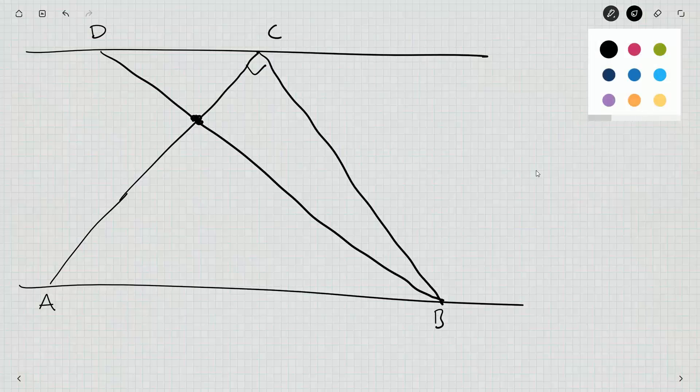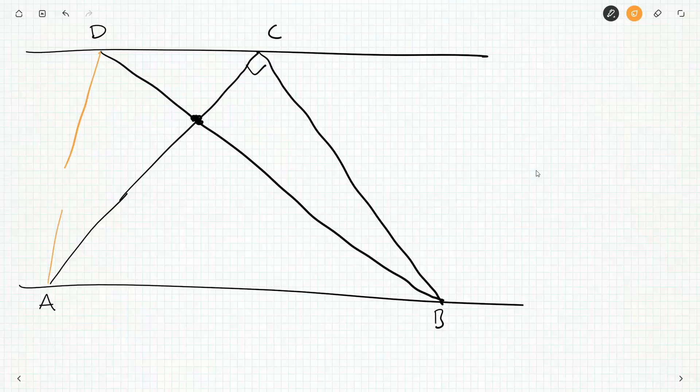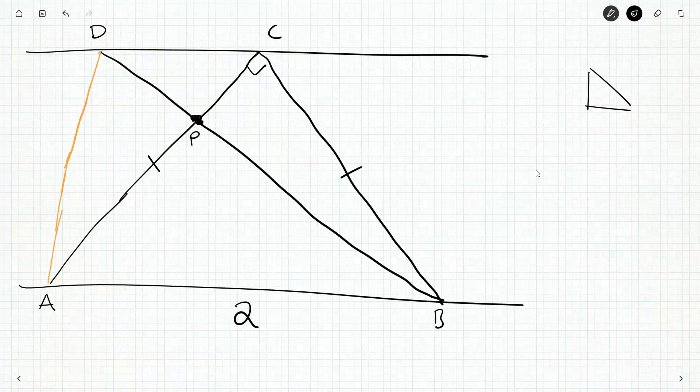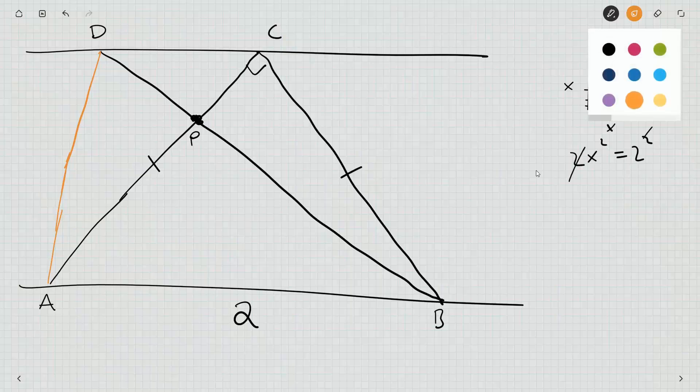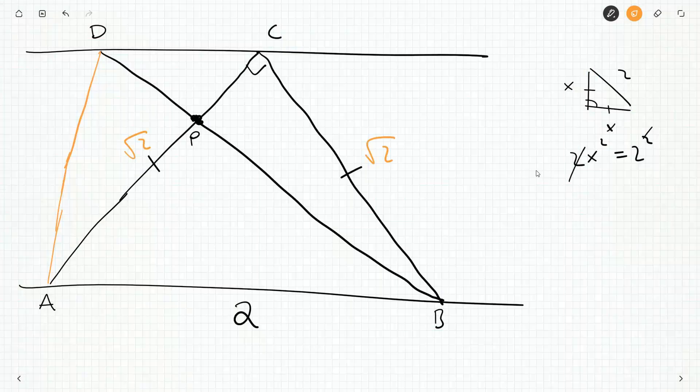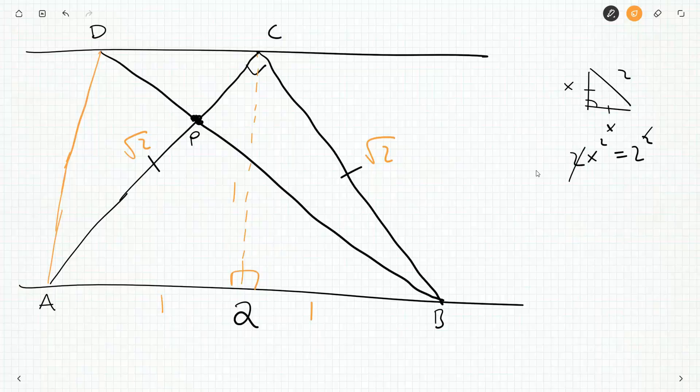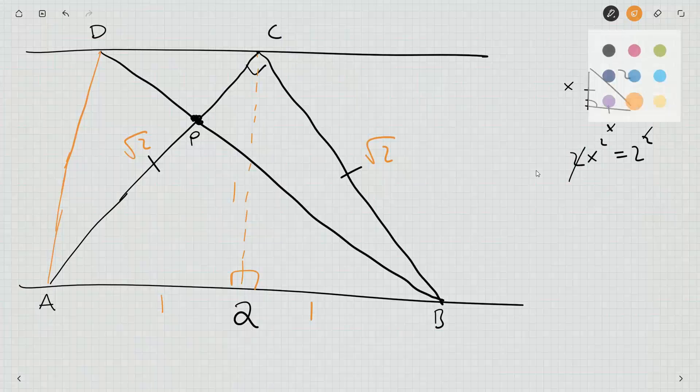Let's copy this into our notepad. Make it kind of big. It might just be that P exists in some fashion, but I'm not entirely sure. Maybe it just forces D to be on this side of C. I don't know yet. We got our right angle here.